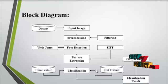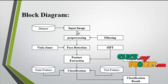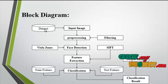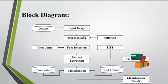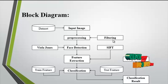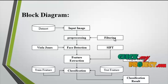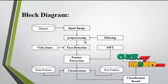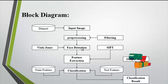Now we discuss the flow diagram for the process. First, the input image is taken from the dataset, which consists of several images. Then the input image undergoes pre-processing. In this pre-processing step, we remove noise from the image using a filtering technique. The Gaussian filter technique is used to remove the noise.